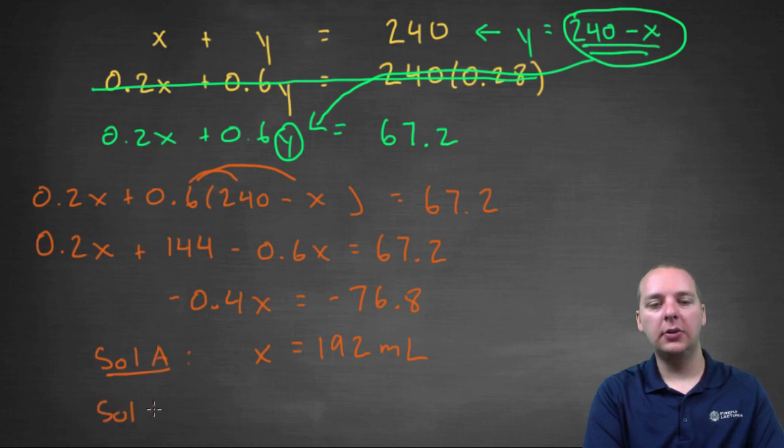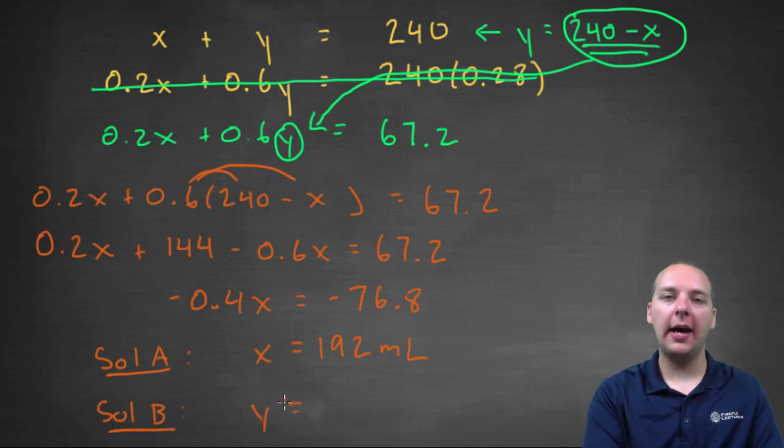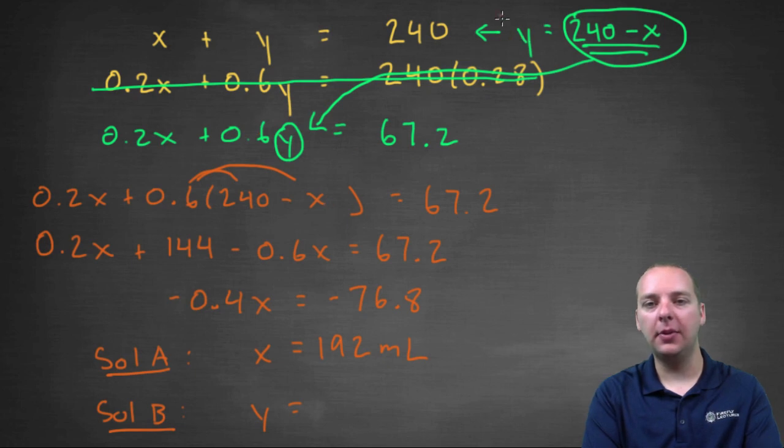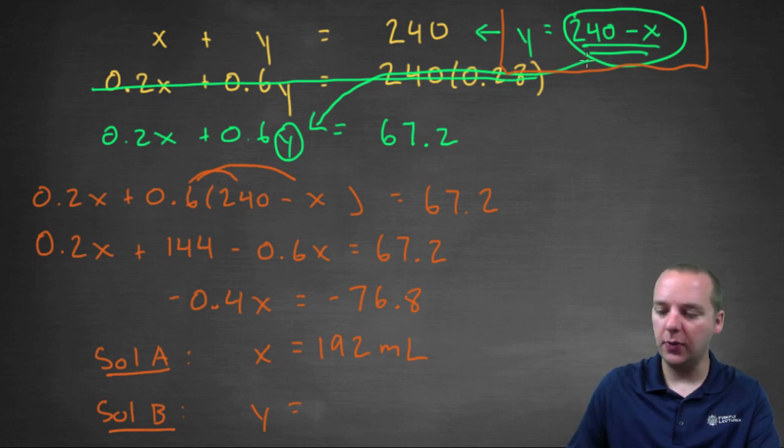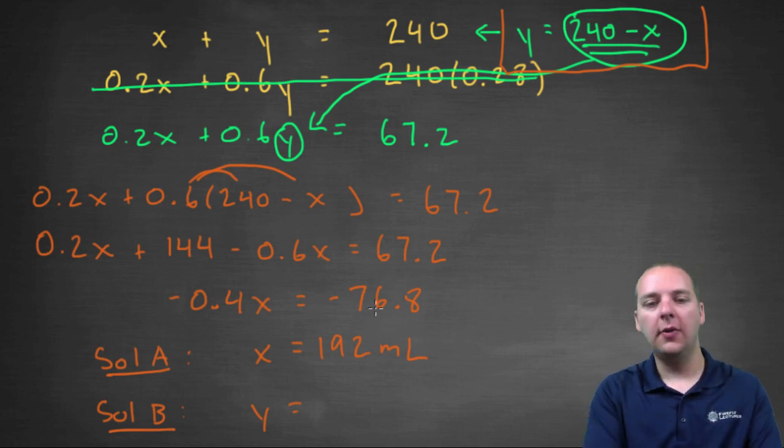Solution A. And then what about solution B? Well we call that y in our chart. So you can use any equation you want. I think probably the easiest to use will probably be this one up here in the corner. So we can find y if we know what x is. So we'll take 240 minus x, our x is 192. And we'll get 48.